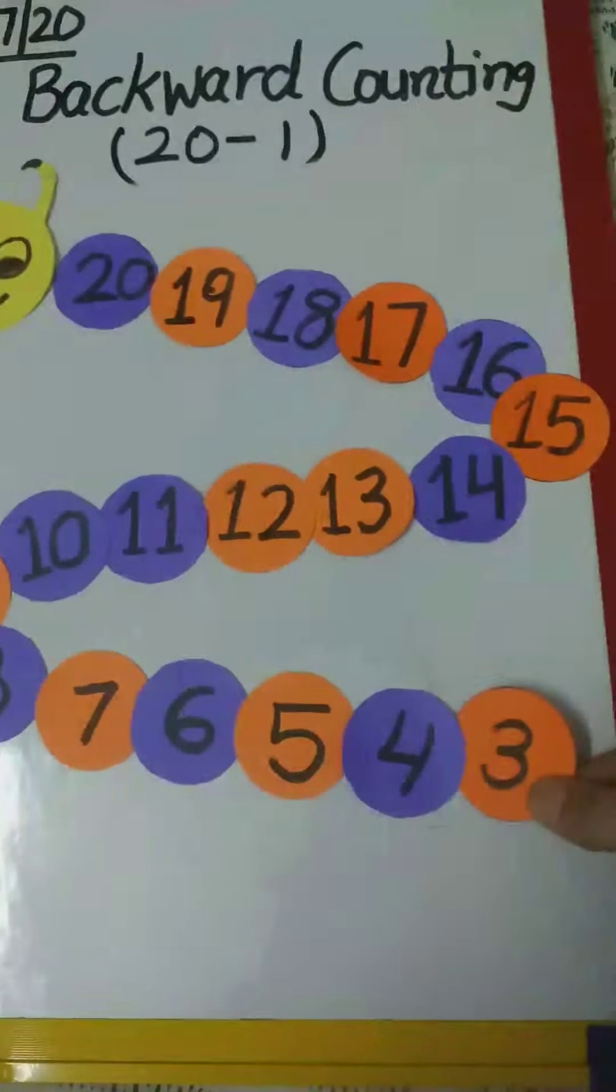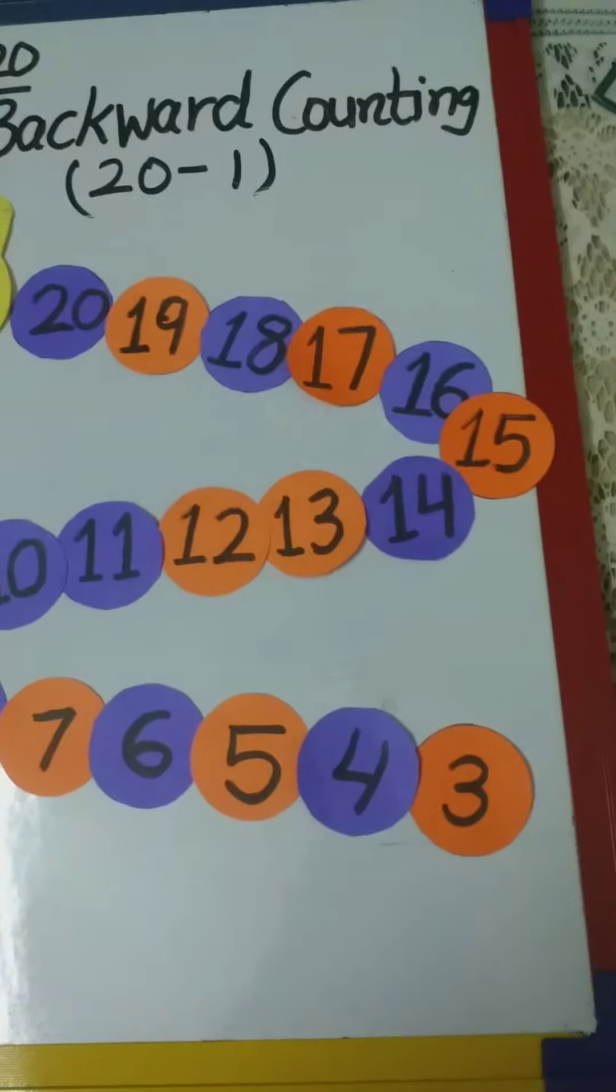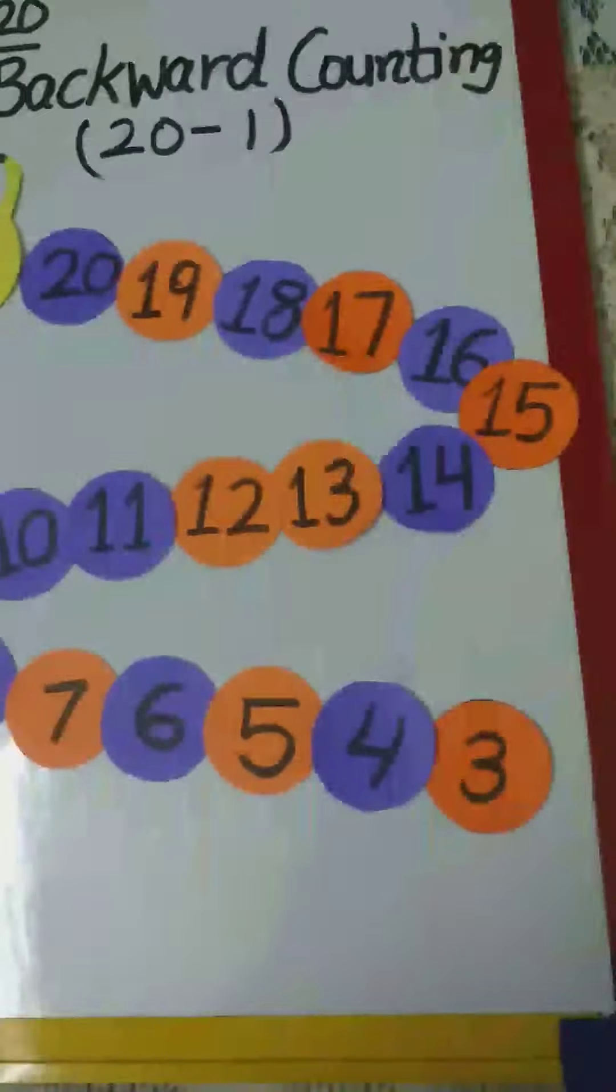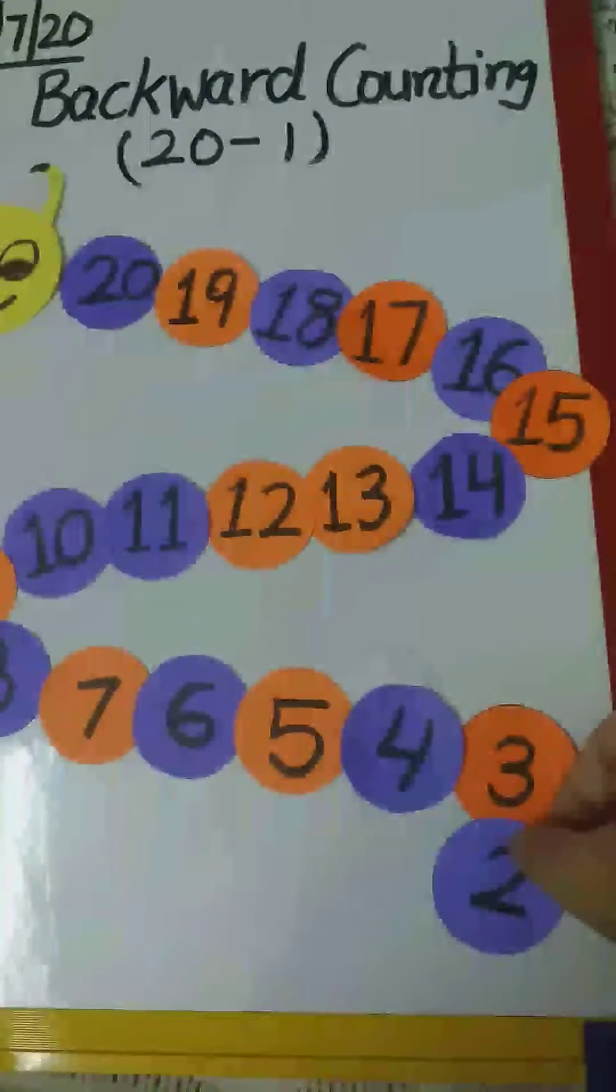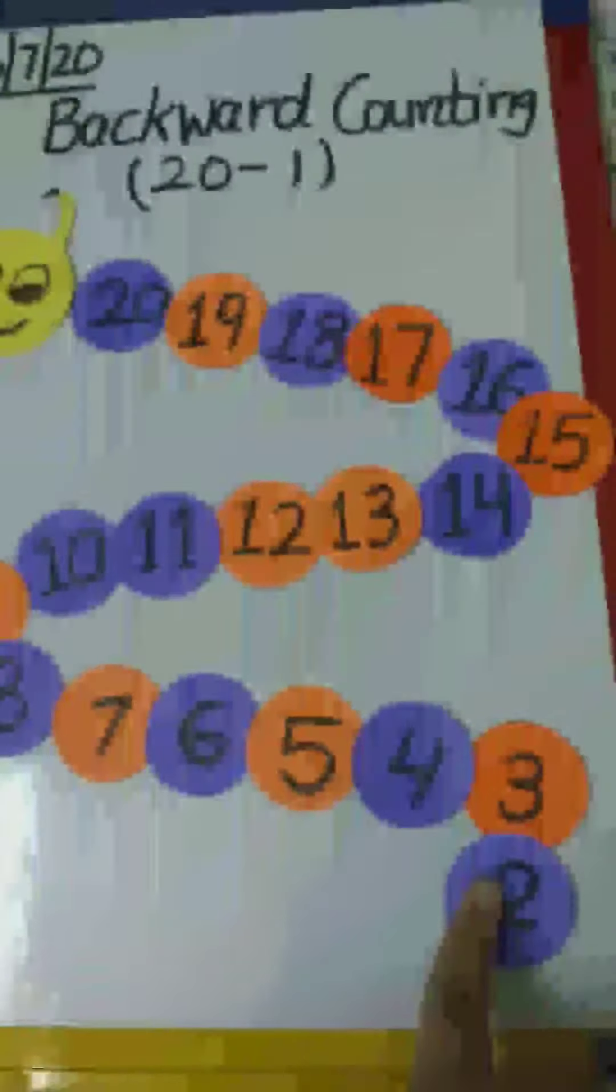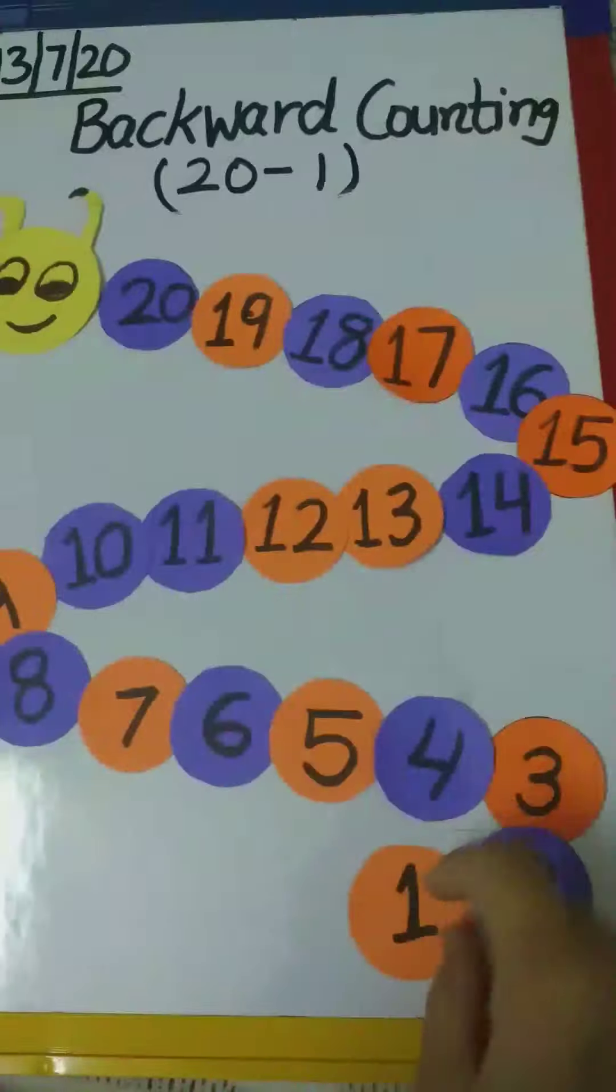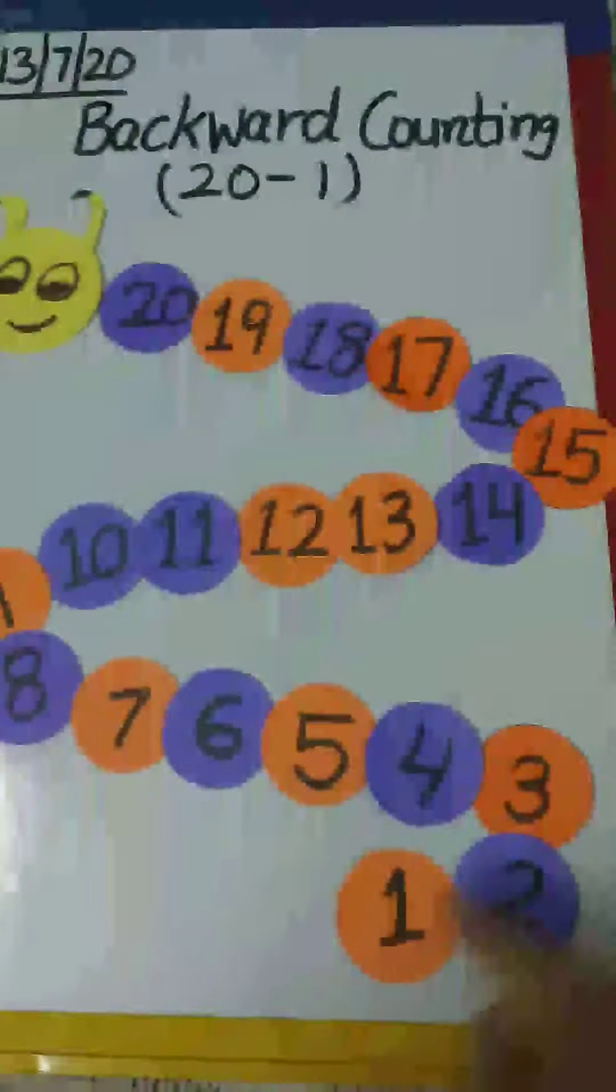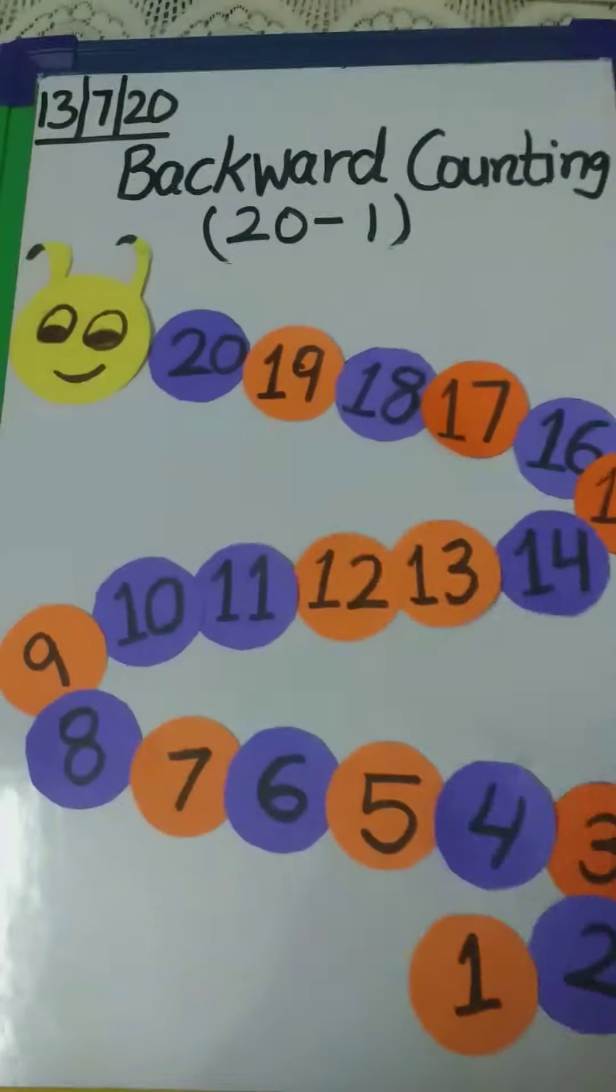And what comes before 4? Yes, number 3. And what comes before number 3 is 2. And what comes before number 2 is 1. So now we complete our caterpillar.